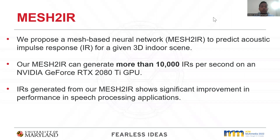We propose a mesh-based neural network to generate acoustic impulse responses for a given indoor 3D scene represented using a mesh. Acoustic impulse responses are used to create high-quality sound experience in interactive applications and to augment far-field speech datasets for speech processing. Our Mesh2IR is capable of generating more than 10,000 acoustic impulse responses per second and is the first neural network-based approach to predict impulse responses for a given 3D scene mesh in real-time.